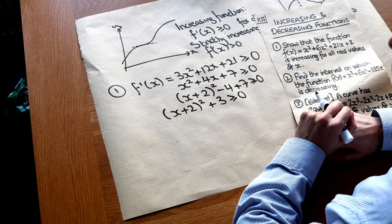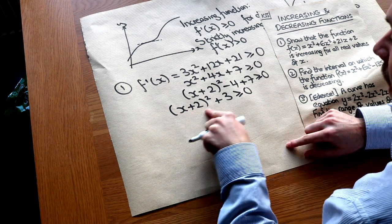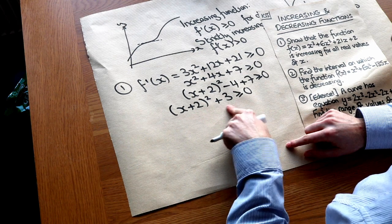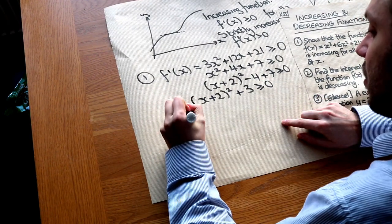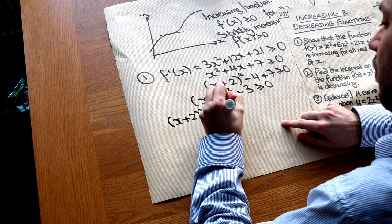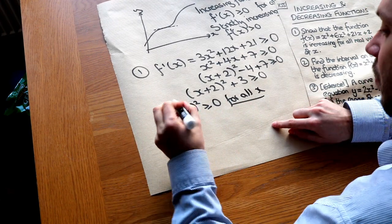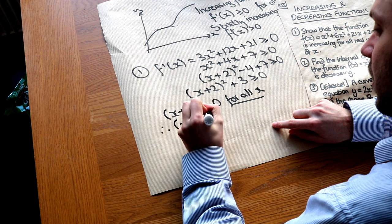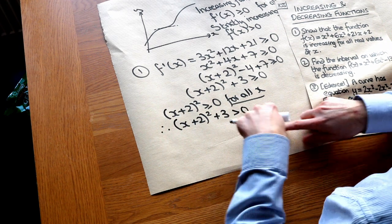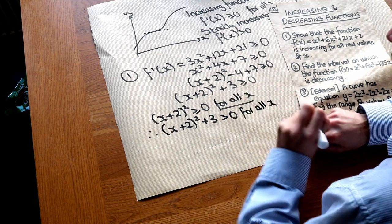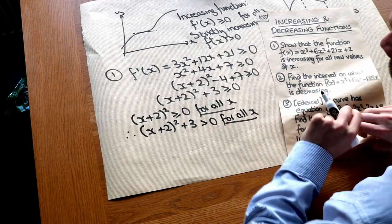Why is this true for all values of x? Because anything squared is at least zero, so (x + 2)² ≥ 0 for all x. Adding 3 means the left-hand side is at least 3, which is greater than zero for all x. Therefore we've proven not only that it's an increasing function, but that it's strictly increasing, because the gradient is strictly greater than zero for all x.